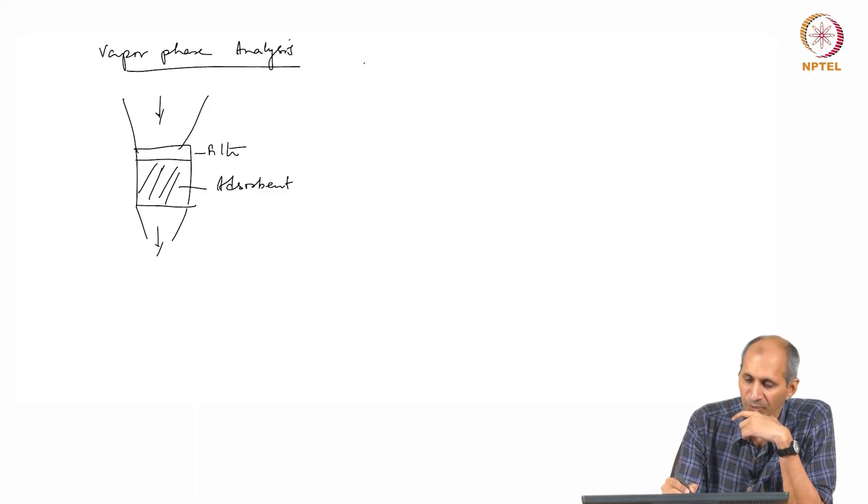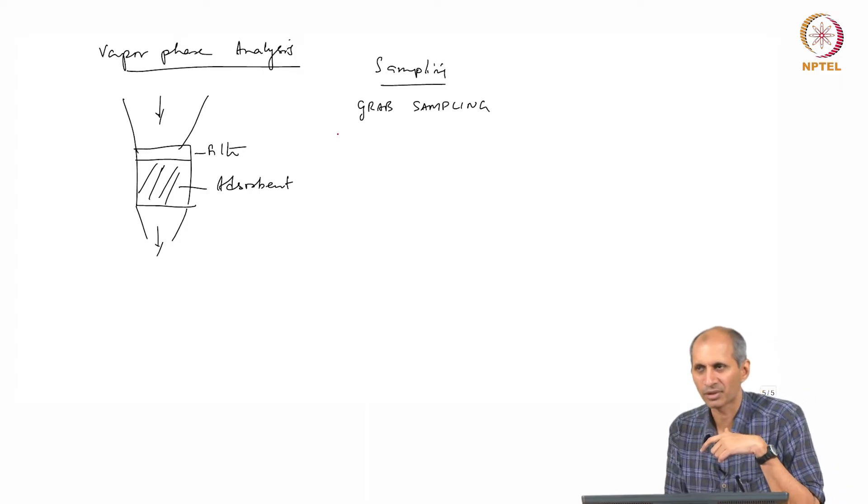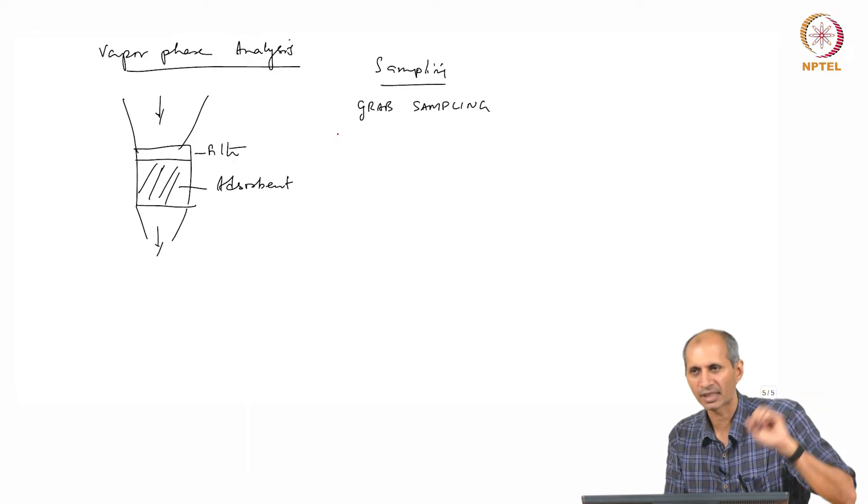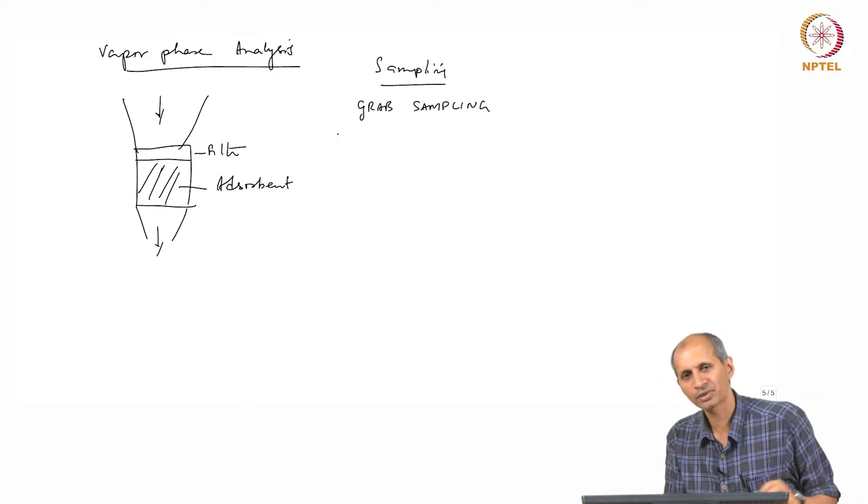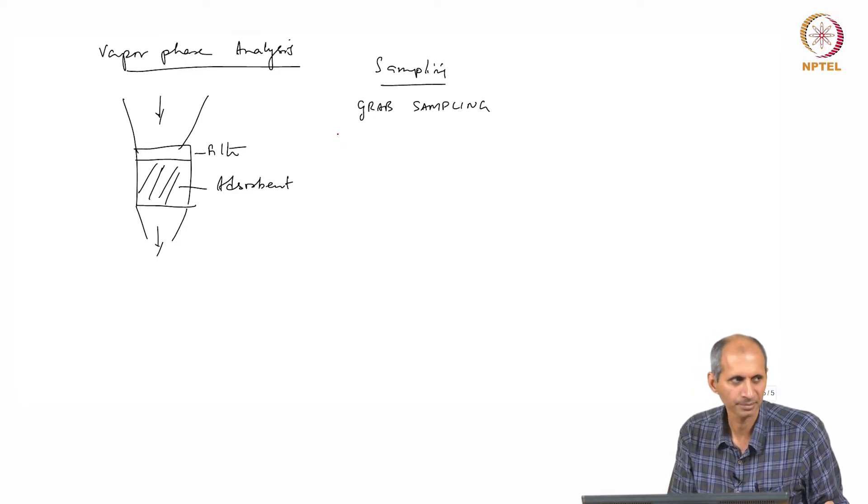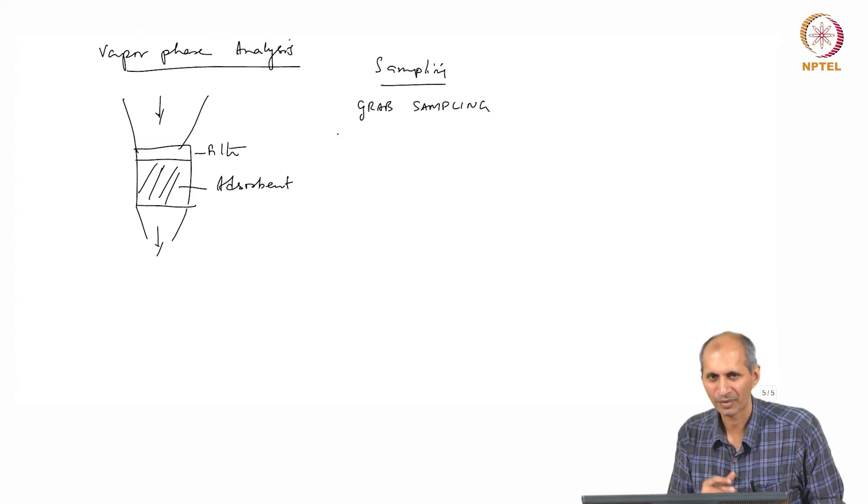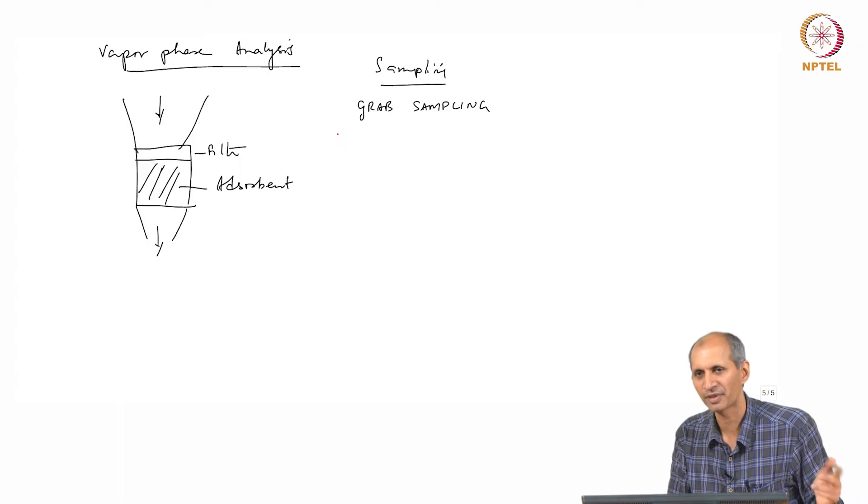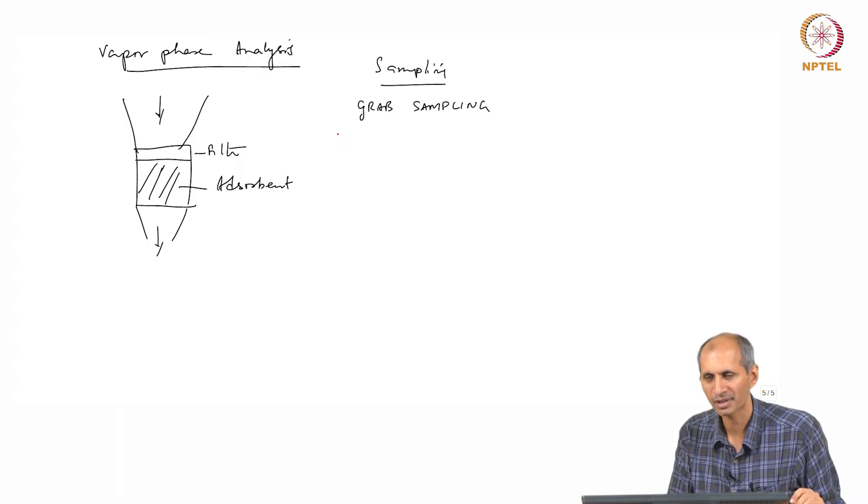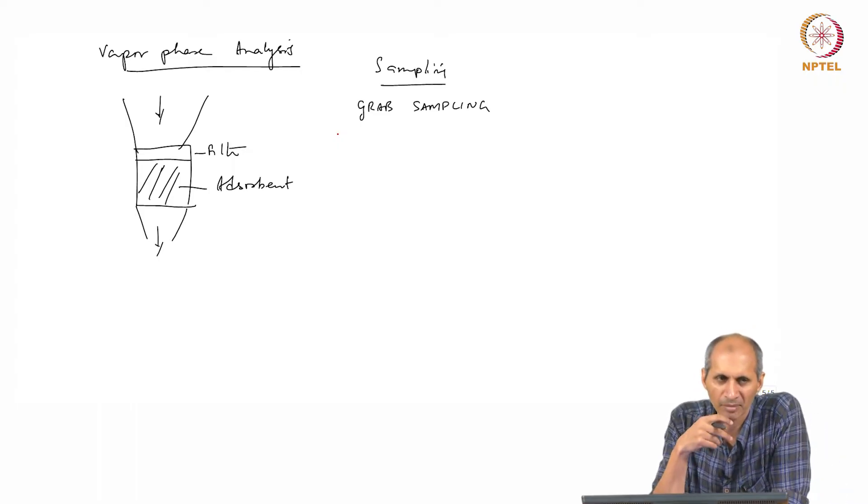So sampling, one method of sampling is what is called grab sampling. This is what you do in water also, in water you take sample, you grab a sample in a container. I can also grab a sample of air in a container. What is the problem? You have to talk about sampling all the way to the instrument. What prevents me from doing it?